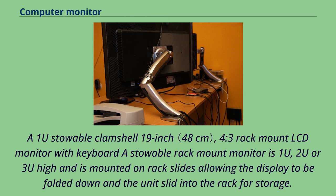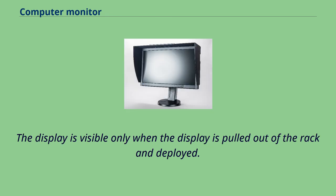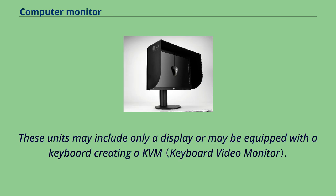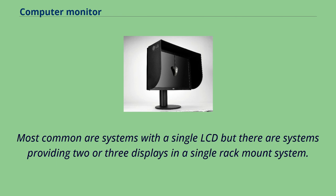A stowable rack mount monitor is 1U, 2U or 3U high and is mounted on rack slides allowing the display to be folded down and the unit slid into the rack for storage. The display is visible only when pulled out of the rack and deployed. These units may include only a display or may be equipped with a keyboard creating a KVM. Most common are systems with a single LCD, but there are systems providing two or three displays in a single rack mount system.